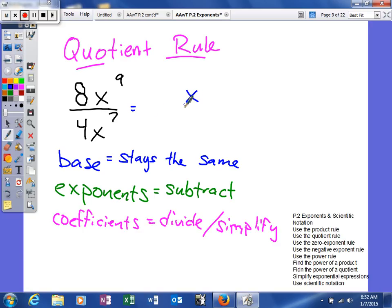Next, what we're going to do is our exponents. We can actually subtract our exponents. And the way you're going to do this is you always take the top number and subtract the bottom number. So 9 minus 7.